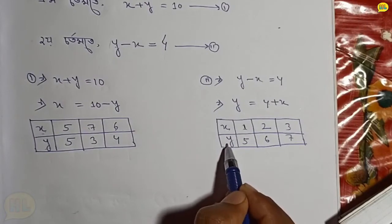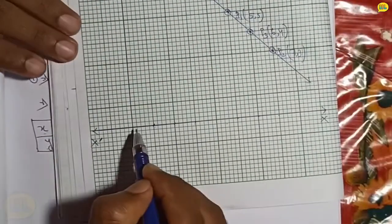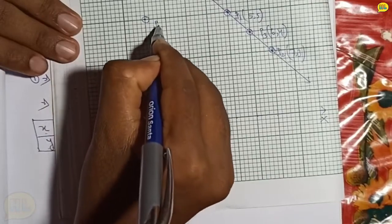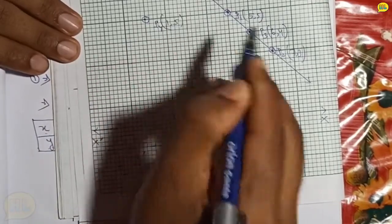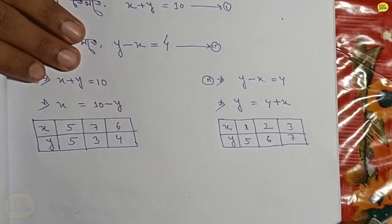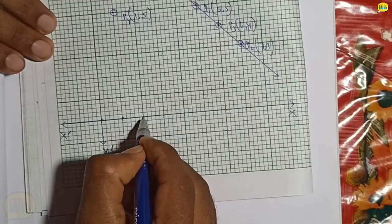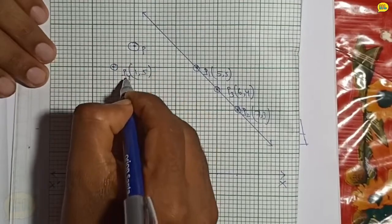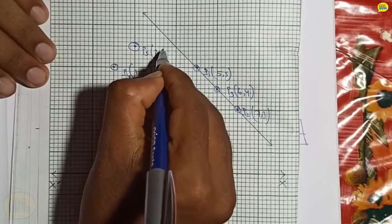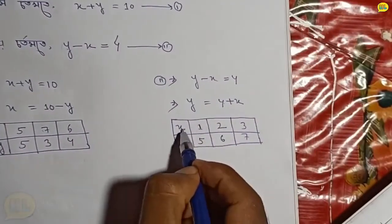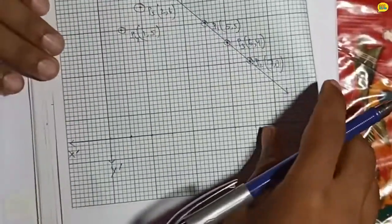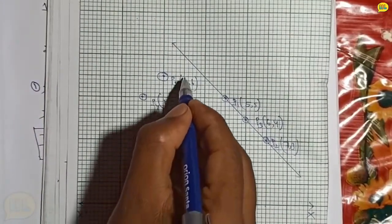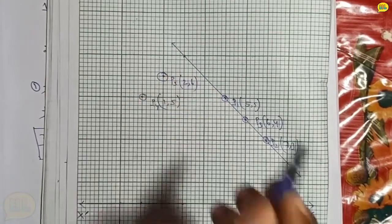P4: x equal 1, y equal 5. x equal 2, y equal 6. x equal 2, y equal 6. P4 and P5: x equal 2, y equal 6. x equal 3, y equal 7. x equal 3, y equal 7. P6: x equal 3, y equal 7.